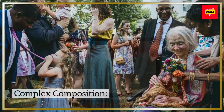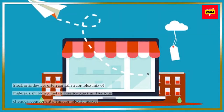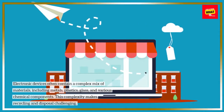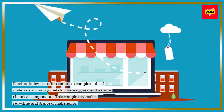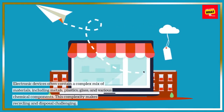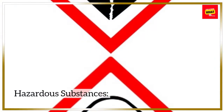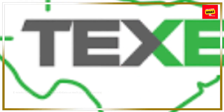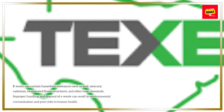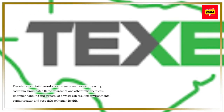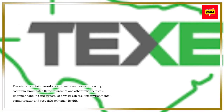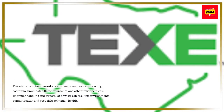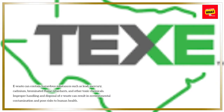Complex Composition — Electronic devices often contain a complex mix of materials, including metals, plastics, glass, and various chemical components. This complexity makes recycling and disposal challenging. Hazardous Substances — E-waste can contain hazardous substances such as lead, mercury, cadmium, brominated flame retardants, and other toxic chemicals.